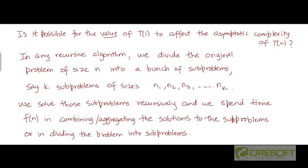To examine this question, let's note that for all the recursive algorithms we have seen and for all the recurrence equations we have seen, we assume that we divided the original problem of size n into a bunch of subproblems. In general, we divided the original problem into k subproblems, each with sizes n1, n2, n3, and so on until n_k. It's possible that some of them could be identical or all of them could be identical.